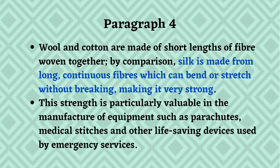In paragraph four: wool and cotton are made of short lengths of fiber woven together. By comparison, silk is made from long continuous fibers which can bend or stretch without breaking, making it very strong. This strength is particularly valuable in the manufacture of equipment such as parachutes, medical stitches, and other life-saving devices used by emergency services.